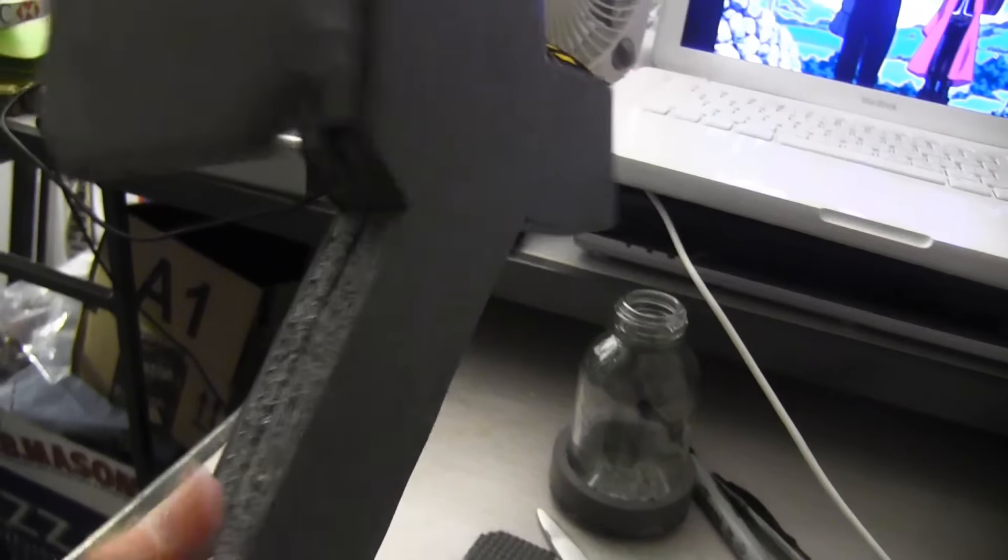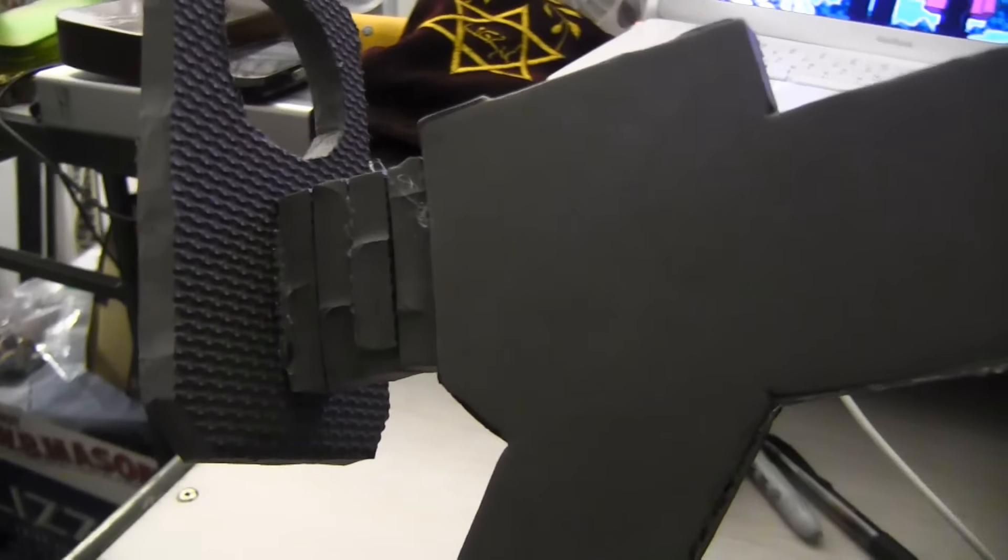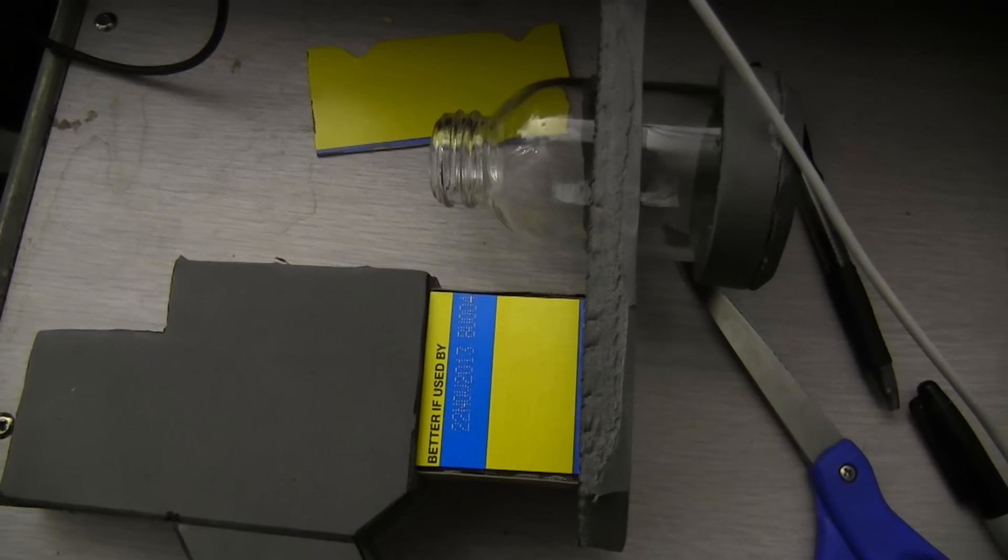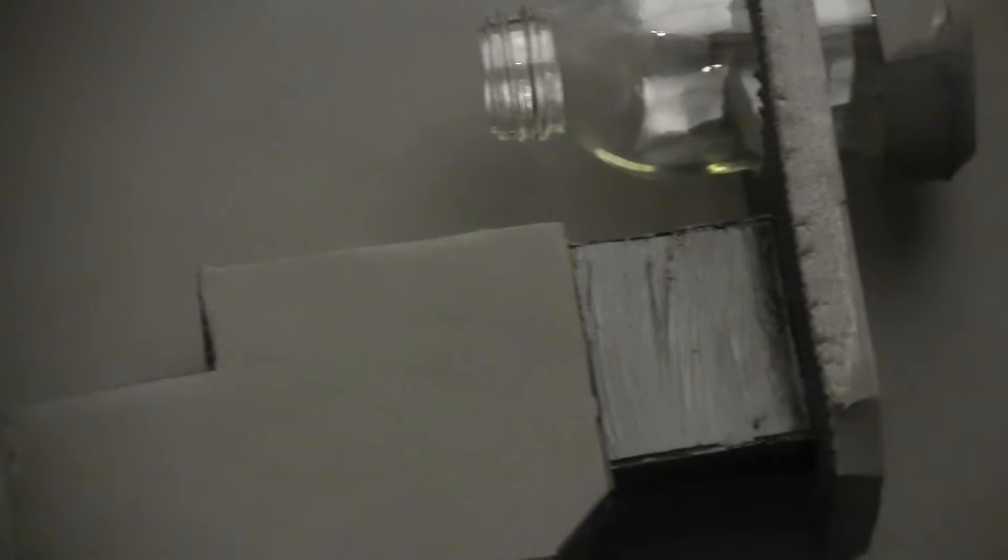Use scrap EVA to make the section between the handle and the jar. I didn't like the look of this, so I covered it in cardboard from a cereal box. Paint the cardboard black.